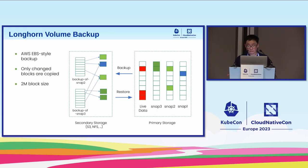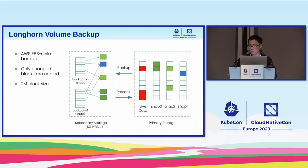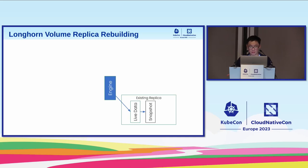For volume backup: Longhorn backs up to an external backup store based on snapshots. We use reference counting to avoid redundant backup chunks in the remote target. Backup to the external store will not be available with SPDK in version 1.5 but is planned as part of feature parity in version 1.6. For live migration and live upgrade: when upgrading Longhorn while running workloads, we pause the volume engine briefly, take an immediate snapshot using copy-on-write, which is very quick.